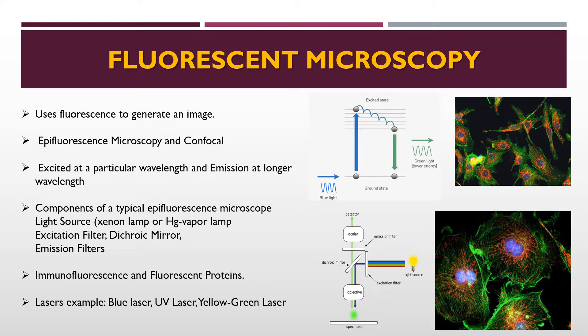Fluorescence is the emission of light by a substance that has absorbed light or other electromagnetic radiation. For fluorescence to occur, the substance must absorb light at a shorter wavelength and emit light at a longer wavelength — when excited by a light source such as a laser, it absorbs light at a shorter wavelength and emits at a longer wavelength. A fluorescent microscope uses fluorescence or phosphorescence to generate an image. The simplest type is the epi-fluorescent microscope; more complicated types include the confocal microscope, which uses optical sectioning to achieve better resolution by reducing background.